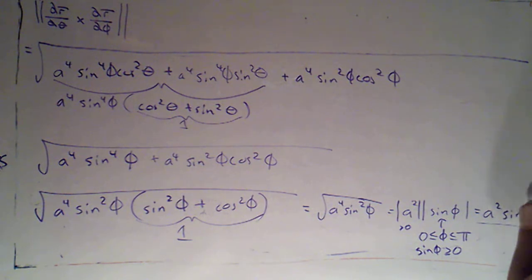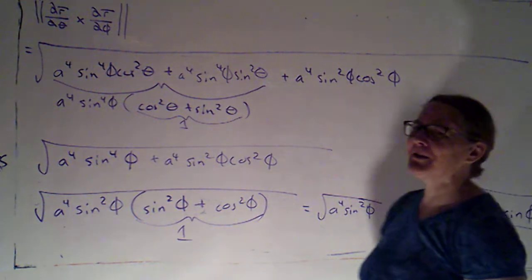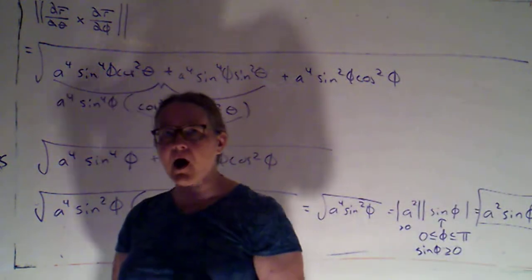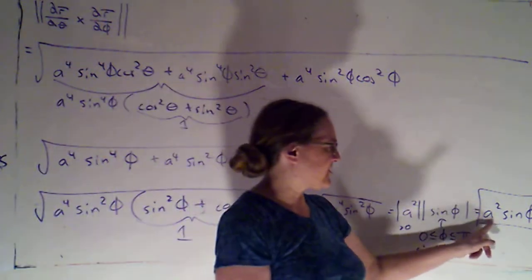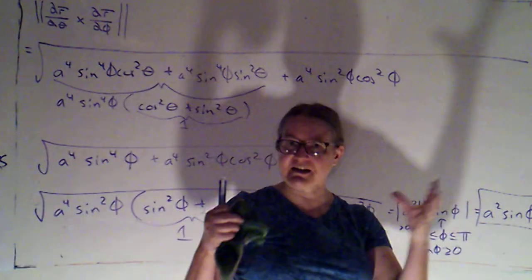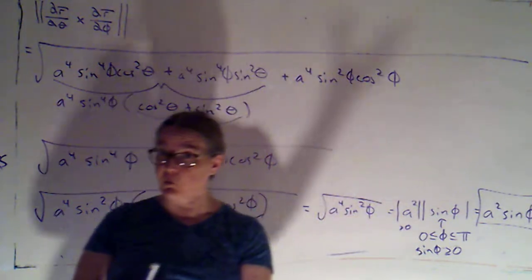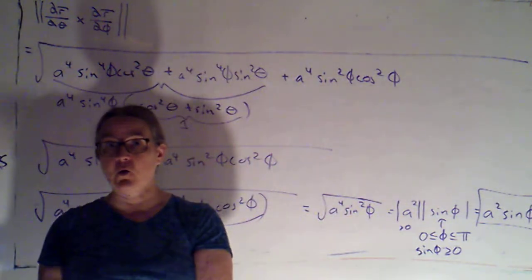Now if you look at that, that should probably look familiar, because remember rho was constant at a. So that actually is just rho squared sine phi, which is usually the scaling factor that I get when I switch to spherical coordinates.